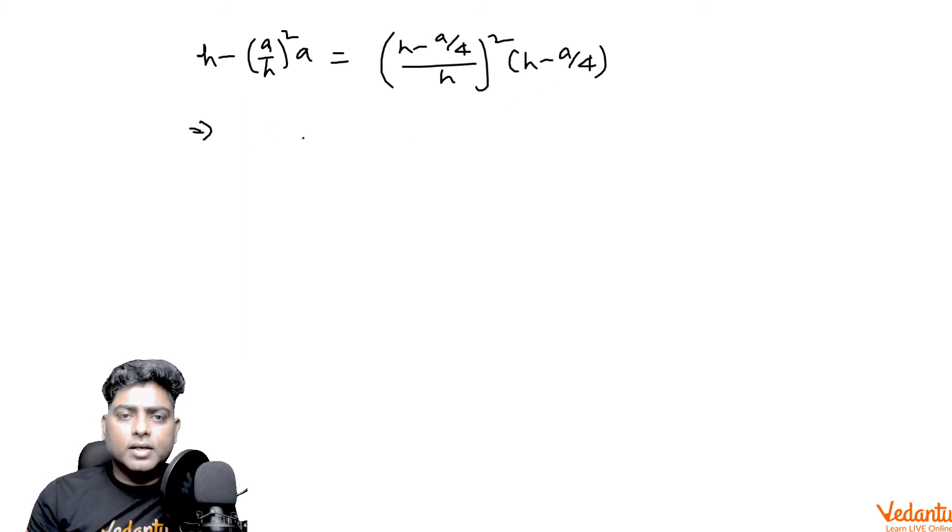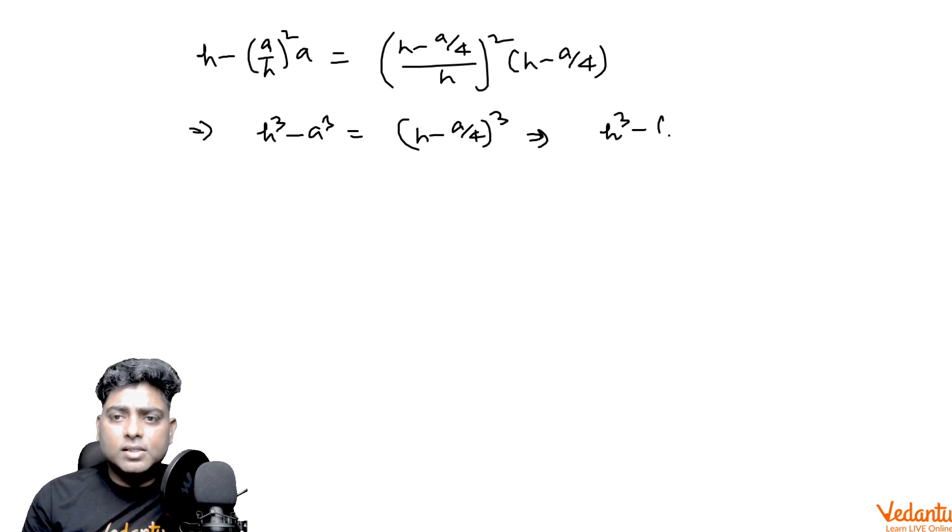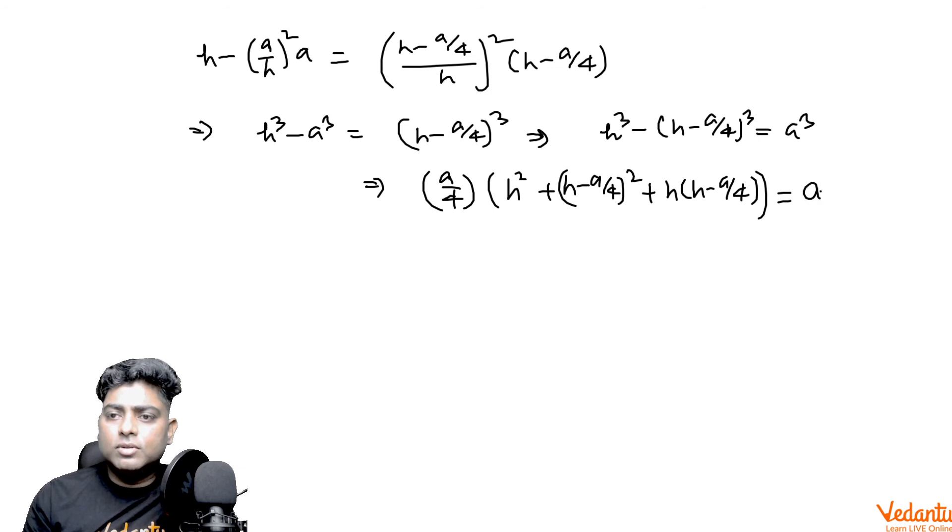From here I can write h cube minus a by 4 whole cube, then h cube minus h minus a by 4 whole cube. Expanding this, a by 4 from one bracket will be canceled, and I will get h square plus h square plus h square from the third bracket minus ah by 2 minus ah by 4 plus a square by 16 equals 4a square.